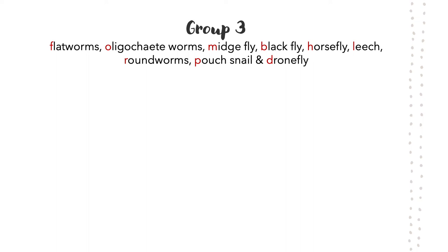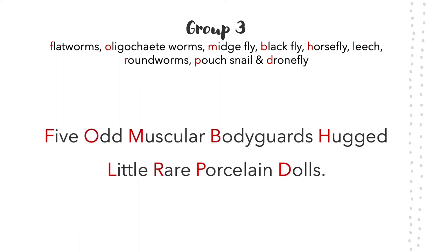Finally, we have a mnemonic device to help you remember the macroinvertebrates that are part of Group 3: 'Five odd muscular bodyguards hugged little rare porcelain dolls.' This mnemonic device covers all three types of worms, midge flies, black flies, horse flies, leeches, pouch snails, and drone flies.